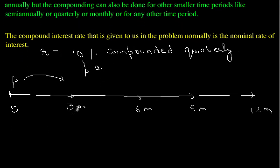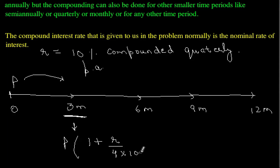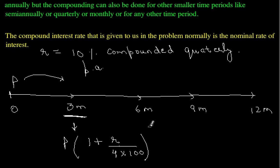The new principal obtained at 3 months would be P times (1 + R/4) divided by 100, because it's a percentage. Why divide R by 4? The 10% interest rate is for 1 year, but we have to calculate the interest rate for a 3-month period, and there are 4 quarters in 1 year, so R/4. Basically from 0 to 3 months we pay 2.5% compound rate of interest.